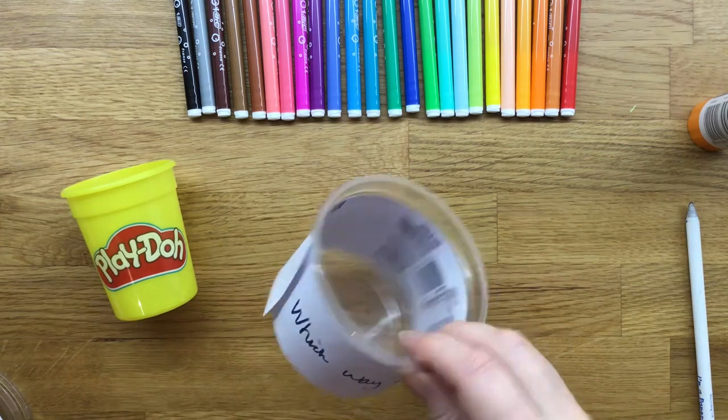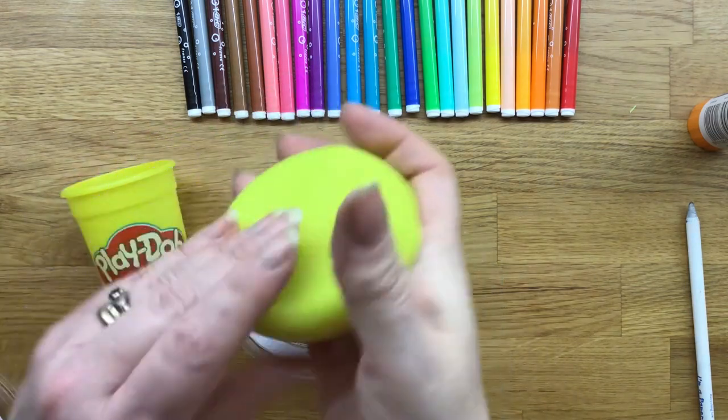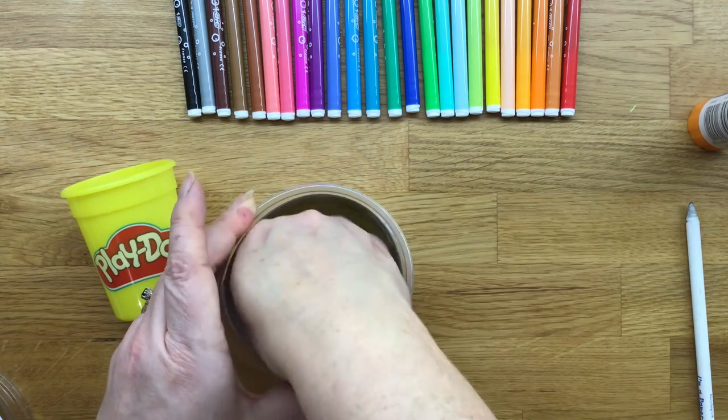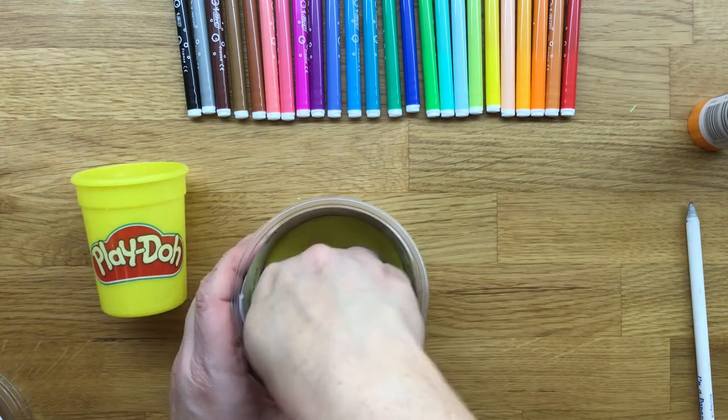Now we need a weight for the bottom of the plastic pot so it doesn't get blown over. So use your play-doh and push it firmly into the bottom of the pot.